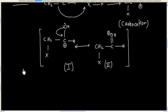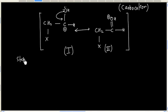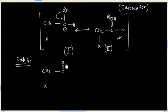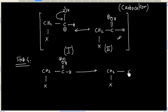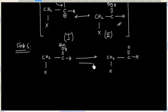In the last step, we again have deprotonation. Taking this resonating structure, we can lose H⁺ to generate the final alpha-halogenated product. This step is reversible, and this step is simply deprotonation.